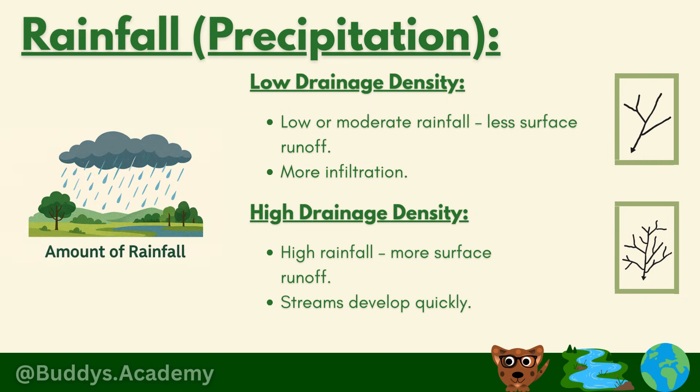One of the main factors is precipitation or rainfall. For low drainage density you need low or moderate rainfall — less water falling on the land means less surface runoff and more infiltration, because the small amount of water can be easily absorbed by the ground. For high drainage density you need high rainfall, because when a lot of water falls at once the soil can't absorb it fast enough, streams develop quickly, and the extra water flows away forming more channels.